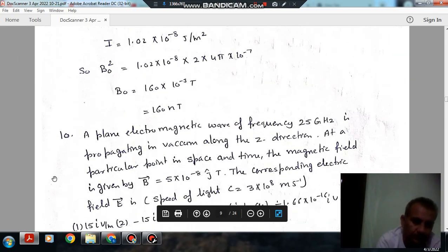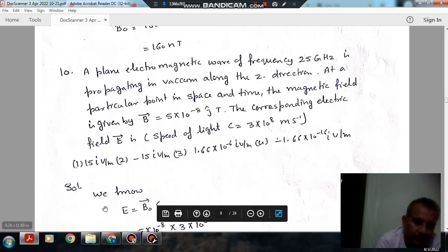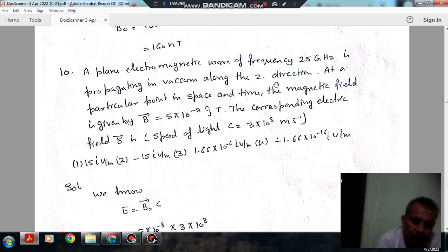Next: A plane electromagnetic wave of frequency 25 gigahertz is propagating along the z direction. At a particular point in space and time the magnetic field is given by B vector equals 5 times 10^-8 j cap tesla. Find the corresponding electric field E.